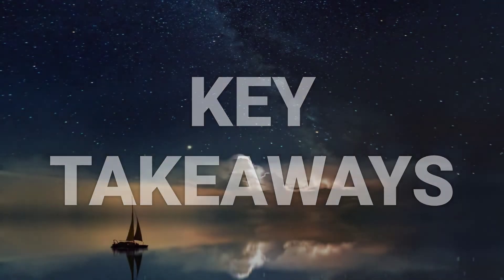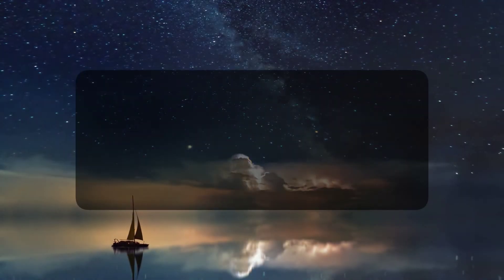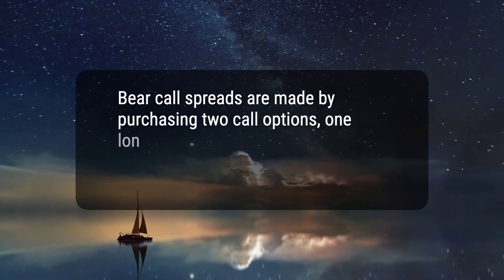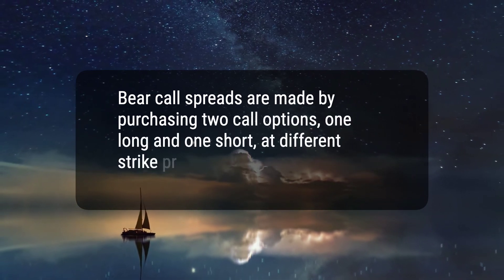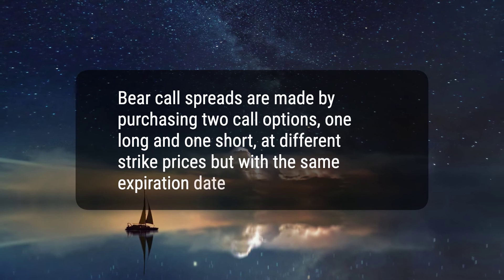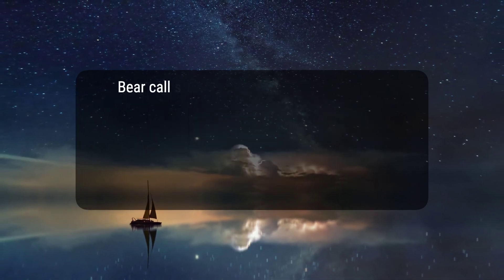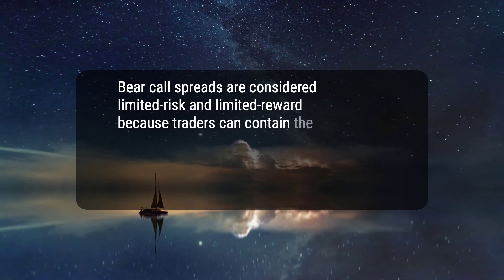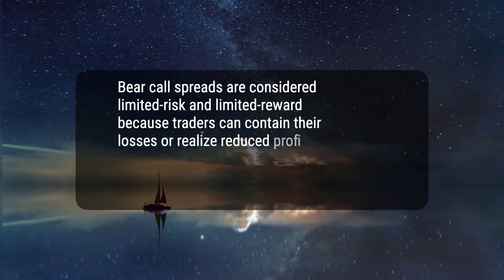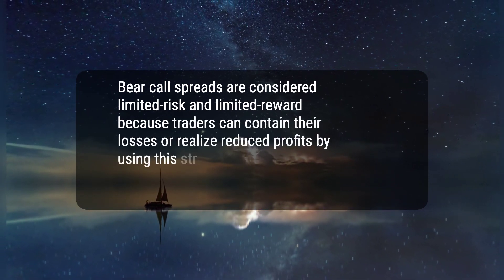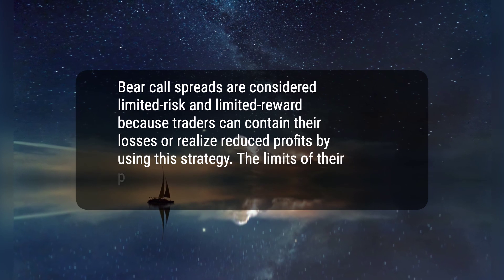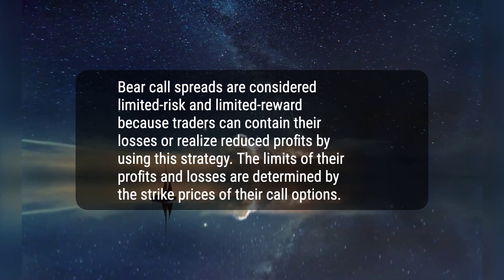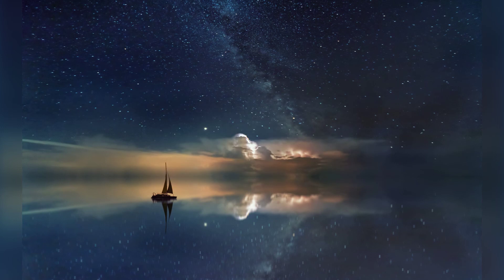Here are two key takeaways. 1. Bear call spreads are made by purchasing two call options, one long and one short, at different strike prices but with the same expiration date. 2. Bear call spreads are considered limited risk and limited reward because traders can contain their losses or realize reduced profits by using this strategy. The limits of their profits and losses are determined by the strike prices of their call options. Hope this helps, thanks for watching.